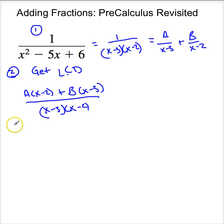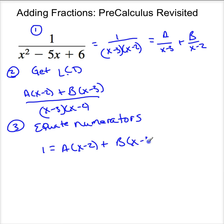Now, the third step is you need to equate the numerators. You need to equate the numerators because the denominators are already equivalent. So 1 has got to equal A times x minus 2 plus B times x minus 3.